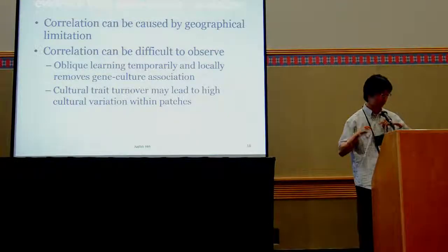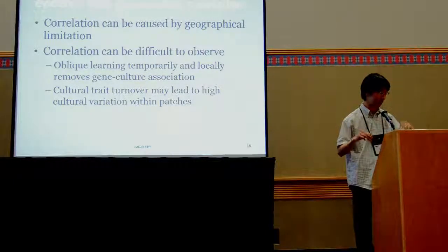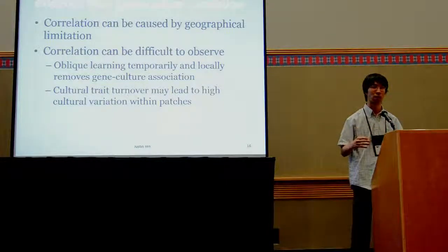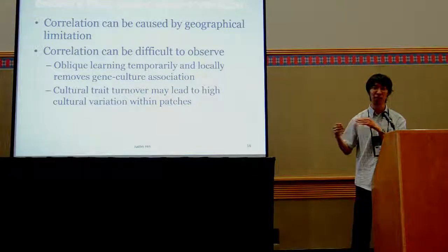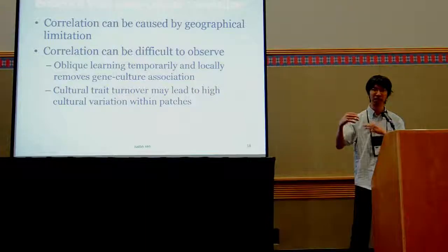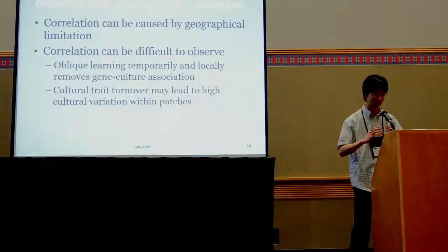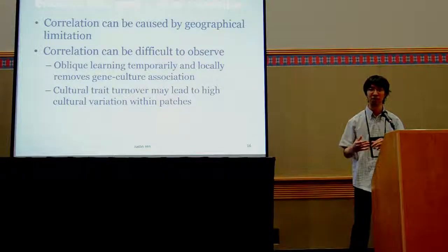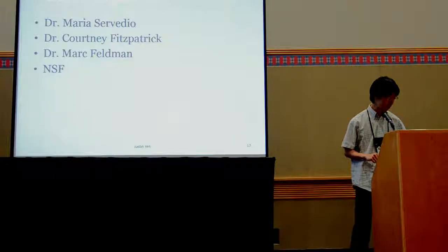What's the punchline? If you're interested in understanding the effect of learned cultural traits on speciation, it's better to observe the mating traits and viability of those cultural traits directly, instead of trying to find a population-level correlation between genes and culture. First, the correlation can be caused by geographical limitations — like phylogeography. Also, the correlation itself may be difficult to observe because oblique learning will temporarily remove any gene-culture association within individual patches. Furthermore, cultural trait turnover can lead to high cultural variation within individual patches, making it difficult to find cultural boundaries. Thank you.